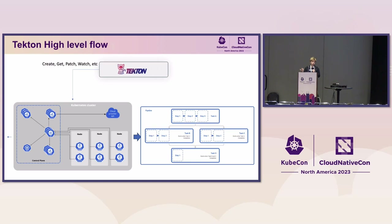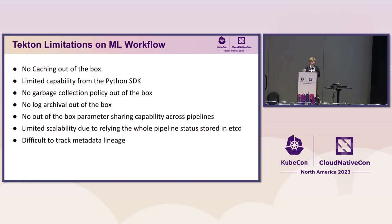But we see limitations when we try to scale and build more complex ML pipelines. Some limitations we found early on: Tekton really has no caching out of the box — it's just a controller that handles workflow with no storage for caching. There's no good Python SDK capability, so it's very difficult for data scientists to compose a pipeline using only YAML. There's also no out-of-the-box garbage collection, so as you run more experiments, those pipelines live on Kubernetes and waste resources.